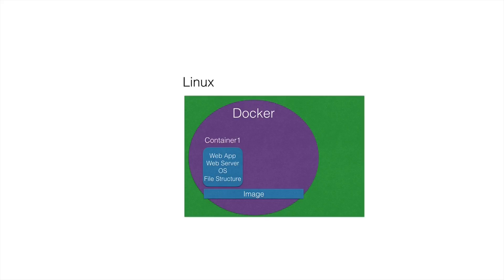The container maps off of the image. You can have your database, your web application, and configurations for those inside of the image. These are driven from a Dockerfile, so the flow goes: Dockerfile → image → container.